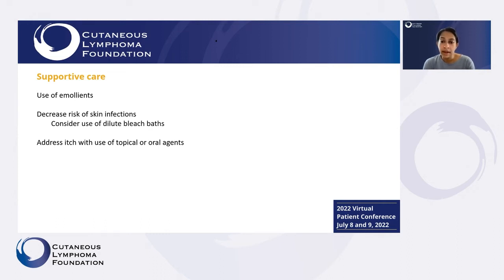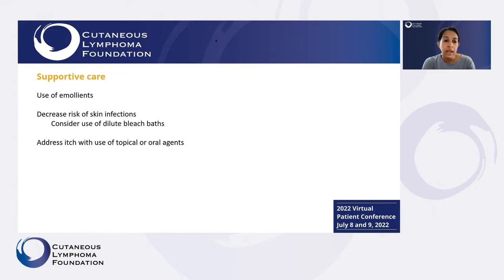For any stage, supportive care is really critical. Good skin care can prevent infections and help reduce symptoms of itching and pain. We recommend the use of a good emollient to hydrate the skin. Sometimes we'll advise dilute bleach baths to help decrease the risk of skin infections. To address itch — the best way to treat it is by treating the lymphoma — but as treatments are kicking in, we can also use topical steroids, oral agents like hydroxyzine or gabapentin, and some other agents.